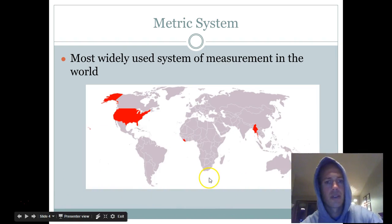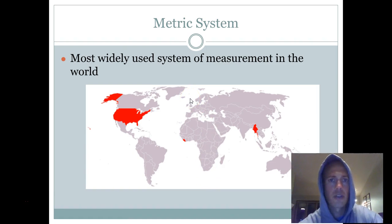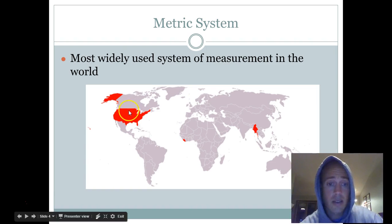This is a map of all the countries that use the metric system as their official way to measure things. You'll notice the United States is in red. So is Liberia. Did Mr. Pratner tell you how to tell where Liberia is yet? It's right there.